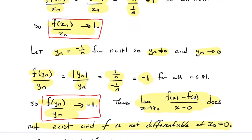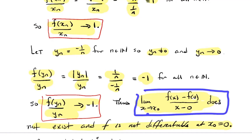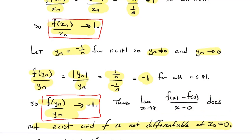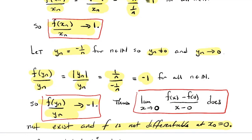So f isn't differentiable at zero — the absolute value function doesn't have a derivative at zero. If this limit existed, then for any sequence that approaches x₀ = 0, none of whose terms are zero, the image sequence would have to converge to the same value. But we found two sequences with different limits. So that limit can't exist and the function's not differentiable.